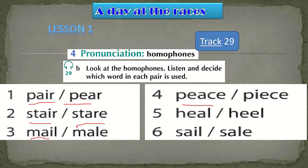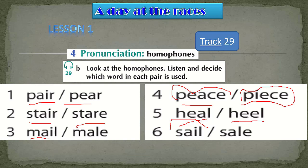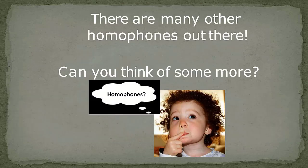Then 'peace' and 'piece' — here in Saudi Arabia you live in peace, and I'm hungry, can you give me a piece of that pie. Then 'heal' and 'heel' — the wound is starting to heal, meaning to get better, and a heel is a part of your foot. Then 'sail' and 'sale' — he is a sailor who can sail the boat, and there is a sale at the shopping center, let's go buy some new clothes.